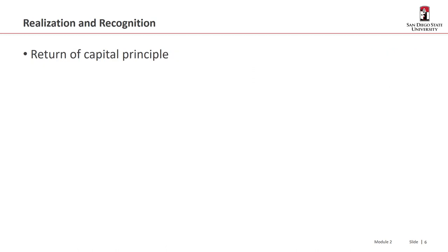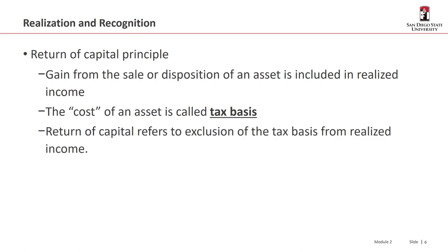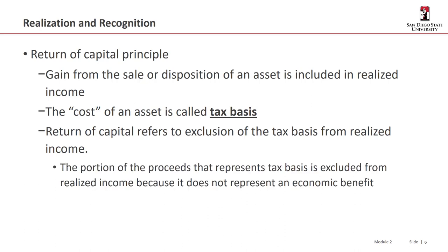We also have the idea of return of capital, which saves taxpayers from recognizing income that doesn't actually exist. The gain from the sale or disposition of an asset is included in realized income. The cost of that asset is called its tax basis. The return of capital principle refers to the ability to exclude tax basis from realized income — the portion of proceeds representing tax basis is excluded because it does not represent an economic benefit.